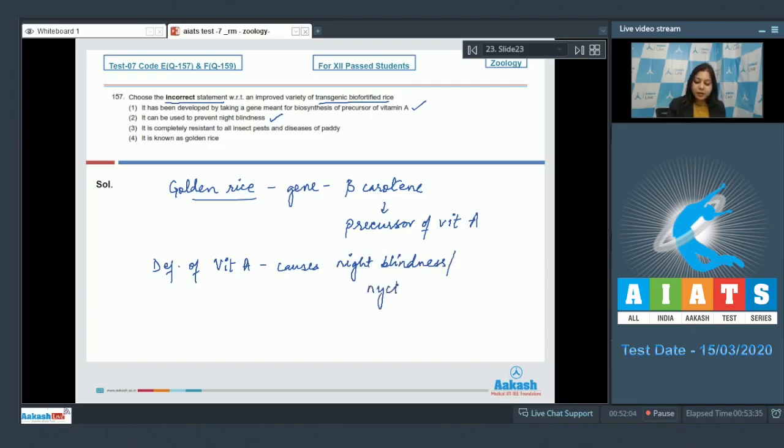Thus by providing vitamin A in rice, night blindness can be cured. Number three, it is completely resistant to all insect pests and diseases of paddy. This is an incorrect statement as the purpose of biofortification was the addition of gene coding for beta carotene and not a gene that will render the plant to be resistant to insects and diseases. Number four, it is known as golden rice. This is also a correct statement.